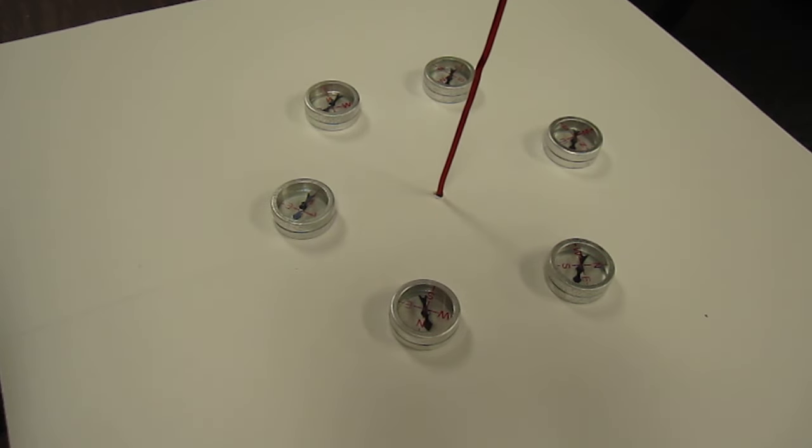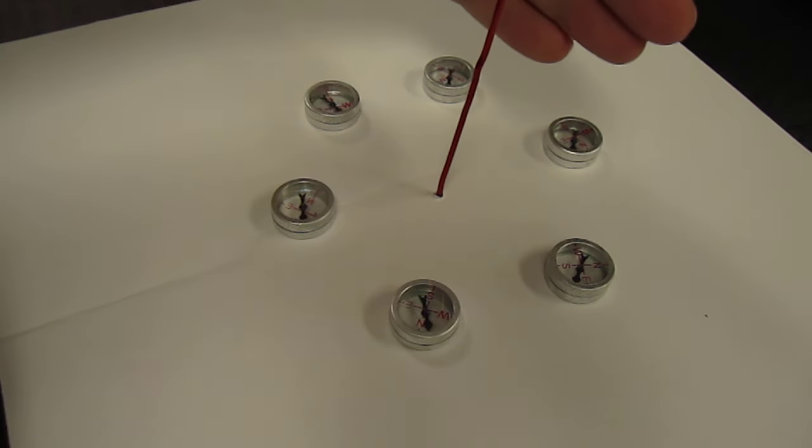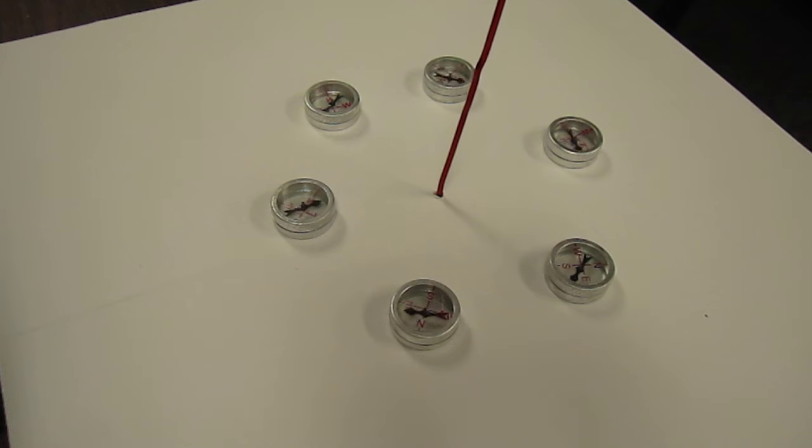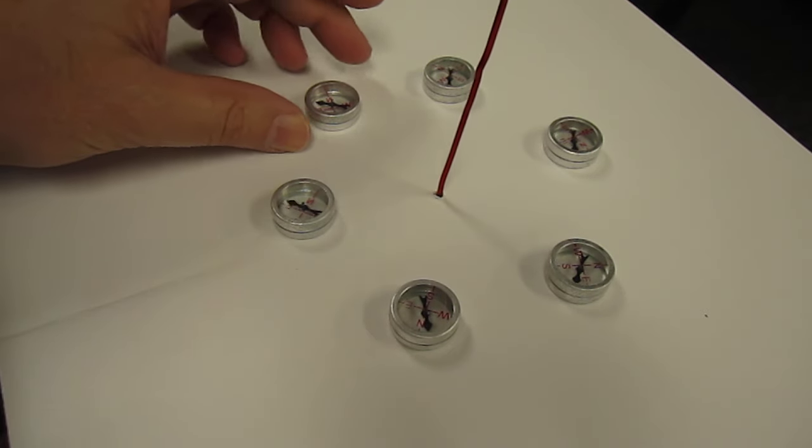They're all being influenced by the Earth's magnetic field and they're not all pointing perpendicular to the wire anymore. They're being more greatly influenced by the Earth's field. This one was having a hard time deciding if the Earth's field is stronger or the one due to the wire.